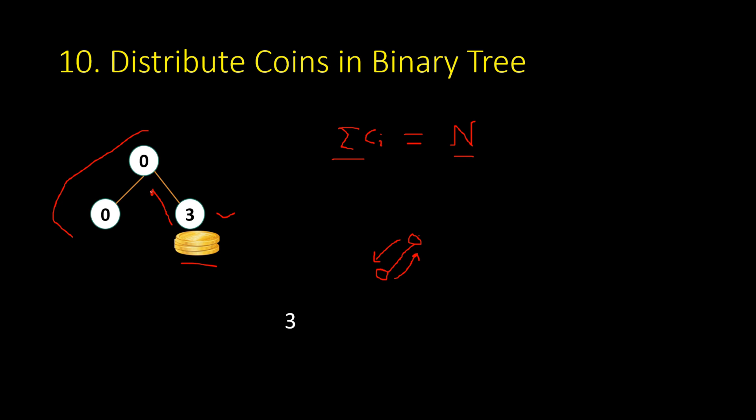The number of nodes is three, number of coins is three. One move: place a coin here, so this will have one, this will have two, and the number of moves is one. Then move one coin again - now this has one and this has two, so two moves total. Now move one coin from here to here - now this has one, this has one, and the third one also has one. So in three moves you can distribute the coins.